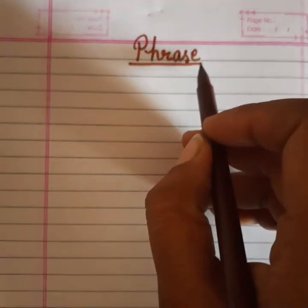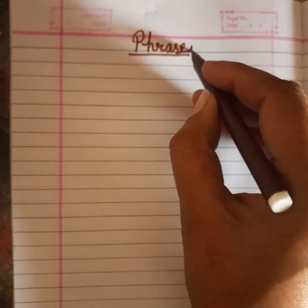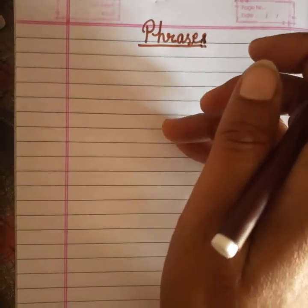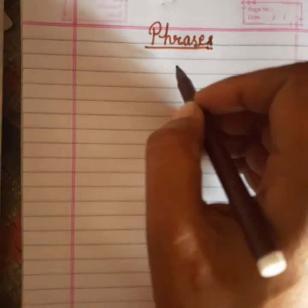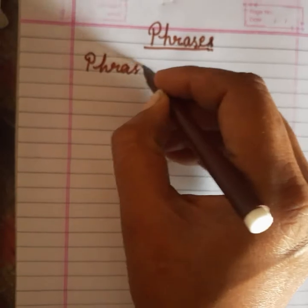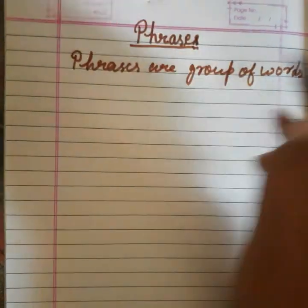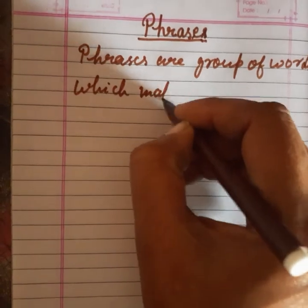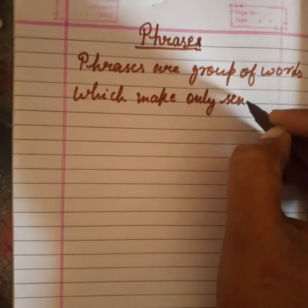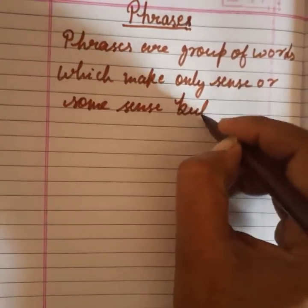Hello students, today we are going to study phrases in this grammar section. A phrase is made up of a group of words that make sense but not complete sense. Phrases are groups of words which make only some sense but not complete sense.